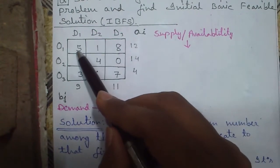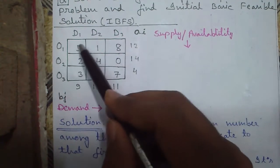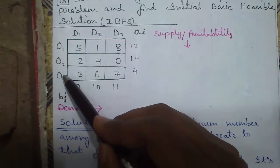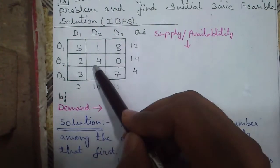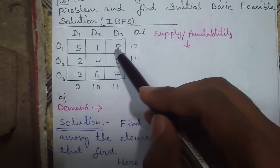So our objective is to allocate or transport goods from these 3 depots O1, O2 or O3 to 3 destinations D1, D2 and D3 in such a manner so that our total cost of transportation is minimum.